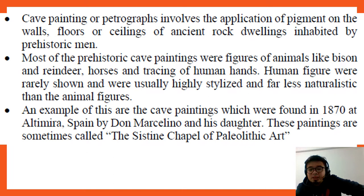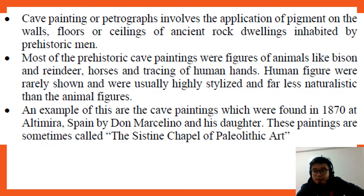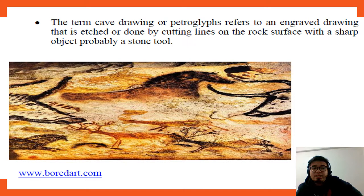They used whatever pigment came from nature — plants that leave stains when touched, or fruits. That is what they used to create pigment on their cave walls. The term cave drawing, or petroglyph, refers to an engraved drawing etched or done by cutting lines on the rock surface with a sharp object, probably a stone tool.